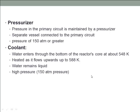The next important component of the pressurized water reactor is the pressurizer. Pressure in the primary circuit is maintained by a pressurizer — a separate vessel connected to the primary circuit and partially filled with water. With the help of the pressurizer, a pressure of 150 atmospheres or greater is applied to heat the water up to temperatures of several hundred Kelvins.